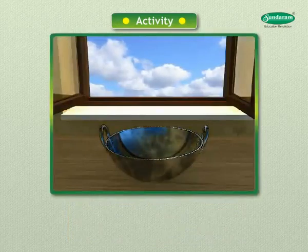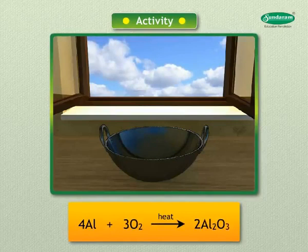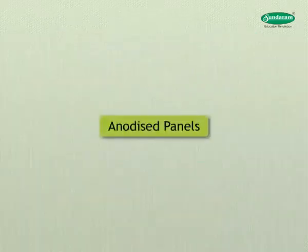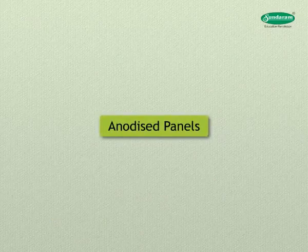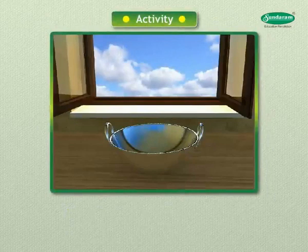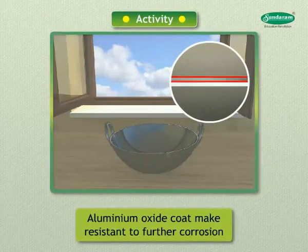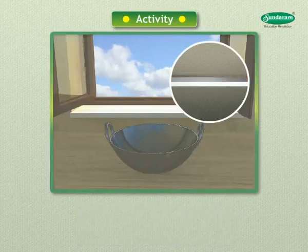Aluminium develops a thin oxide layer when exposed to air: 4Al + 3O₂ → 2Al₂O₃. Anodizing is a process of forming a thick oxide layer on aluminium. Aluminium develops a thin oxide layer when exposed to air, and this aluminium oxide coat makes it resistant to further corrosion.